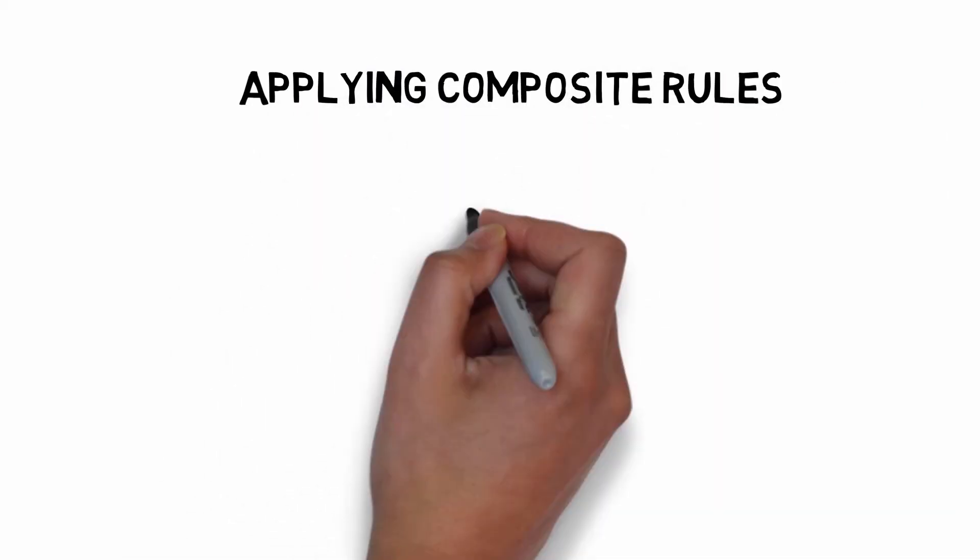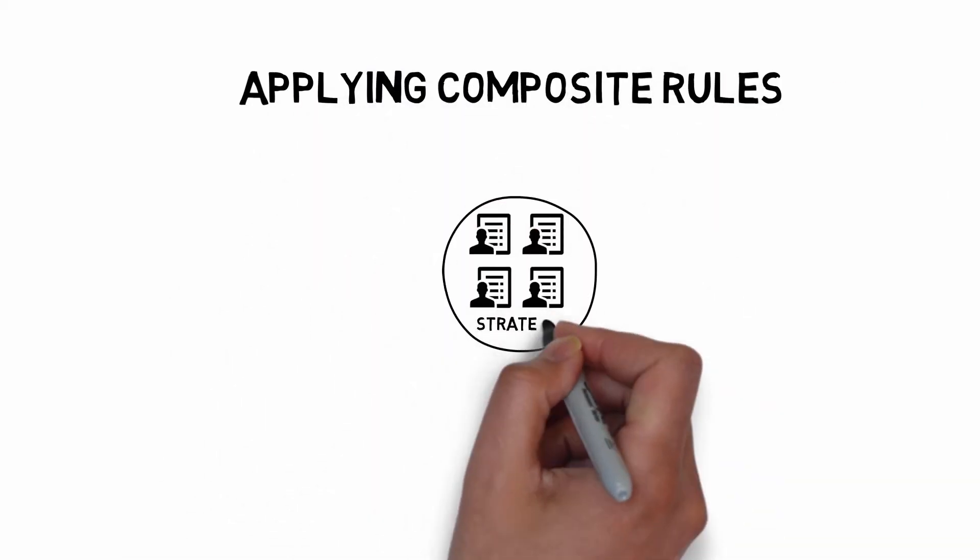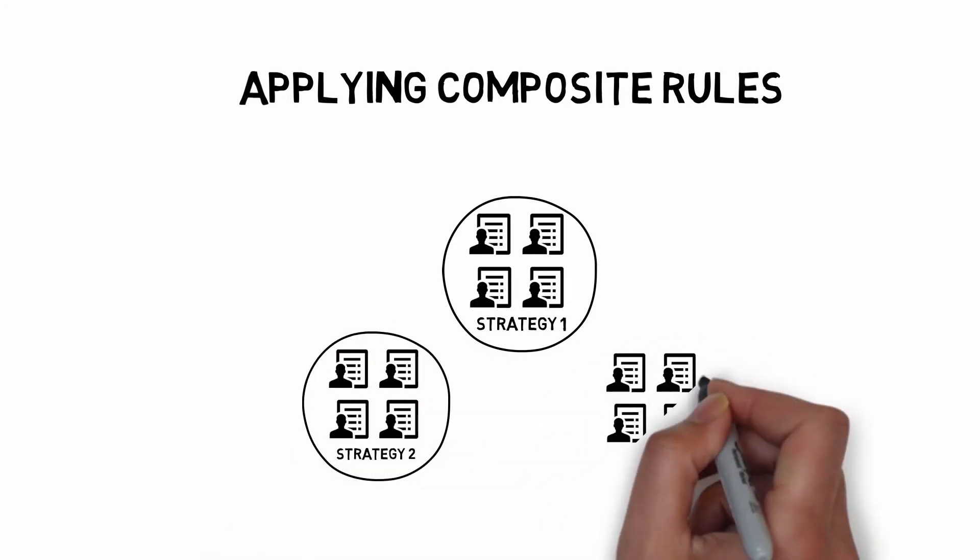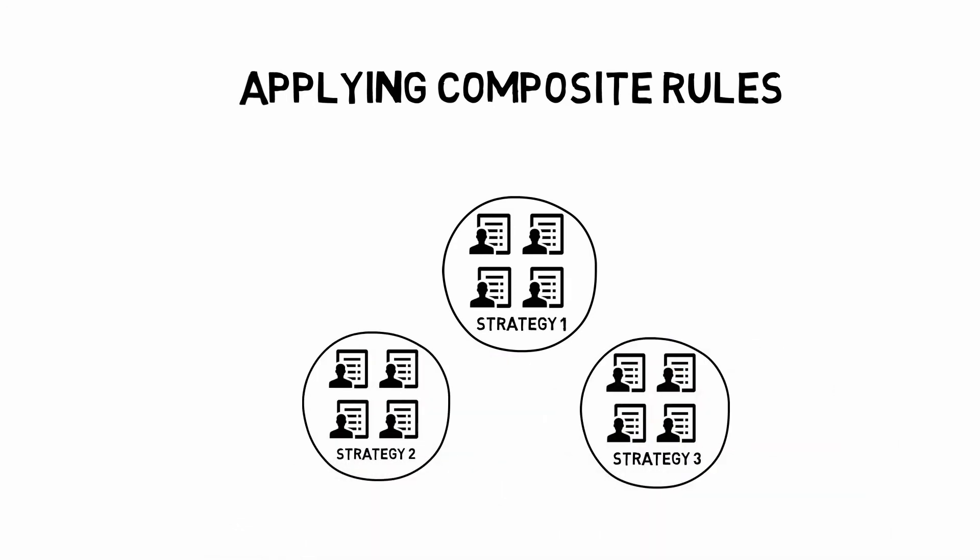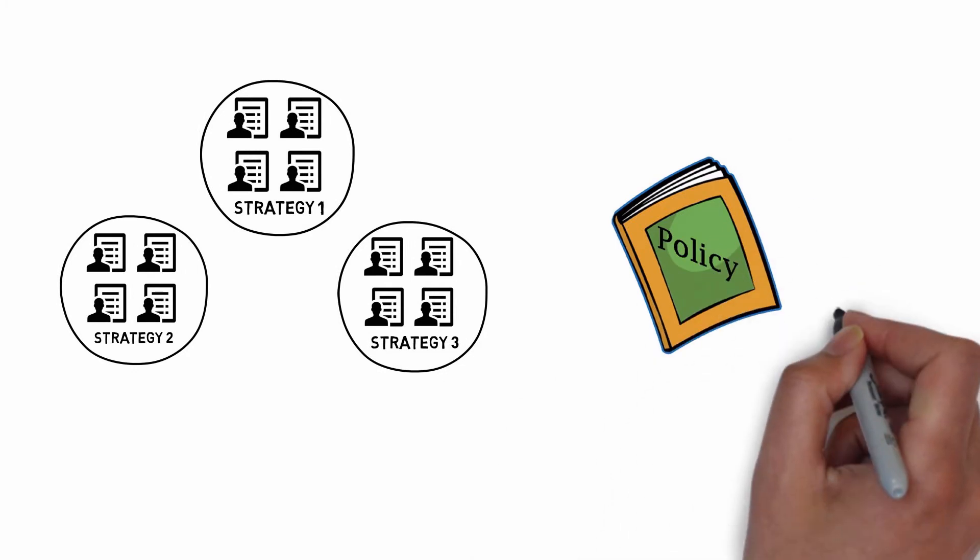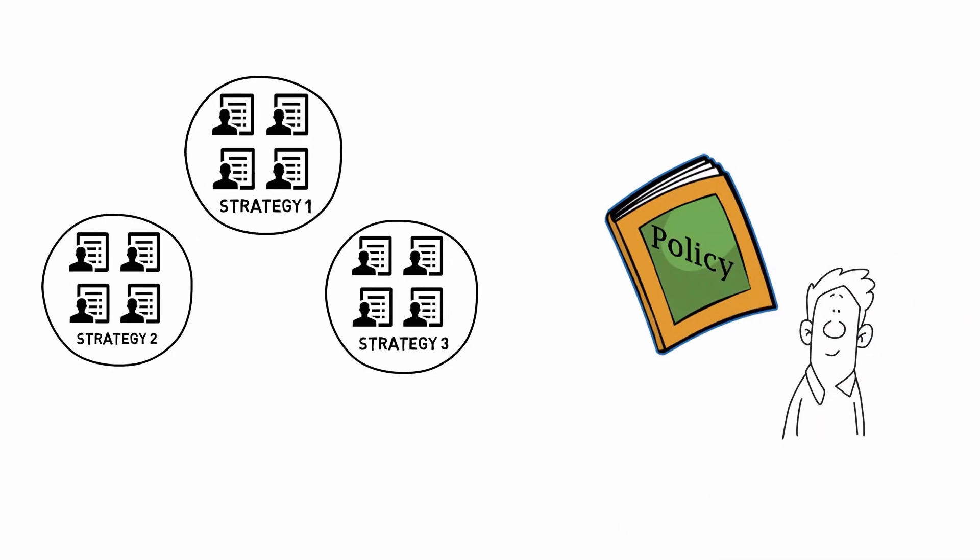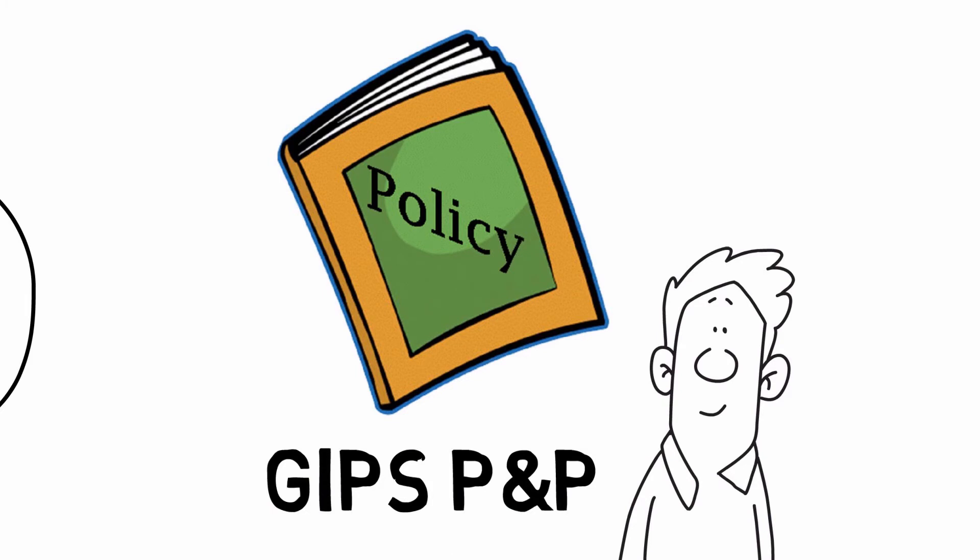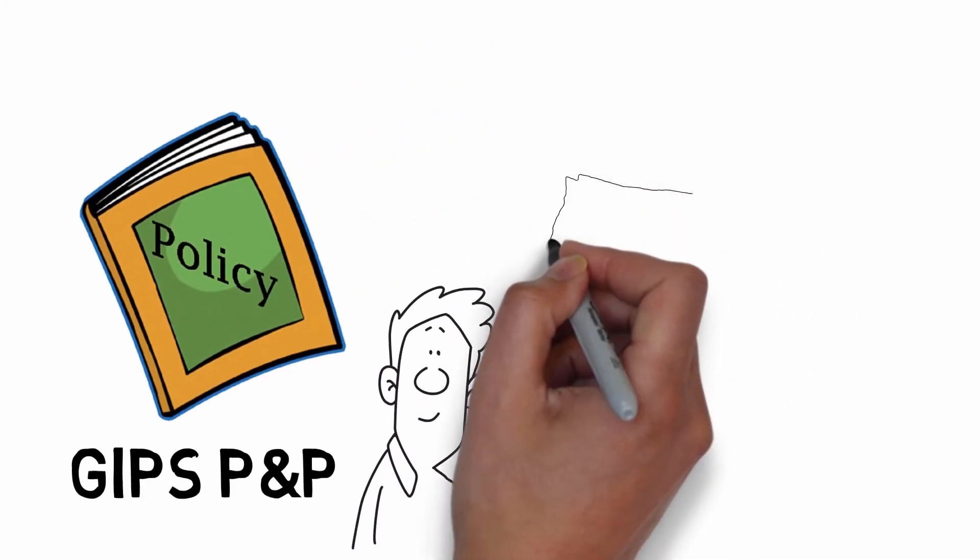Applying Composite Rules. Once portfolios are grouped by the strategy they followed for each period, you can then apply your firm's composite rules established in your GIPS Policies and Procedures document, or GIPS P&P, to create each strategy's corresponding composite.